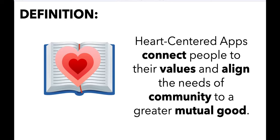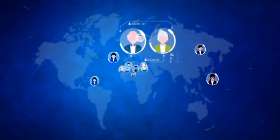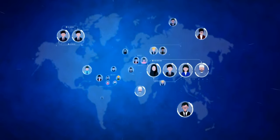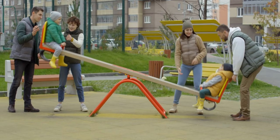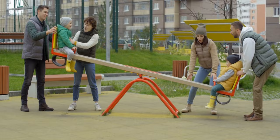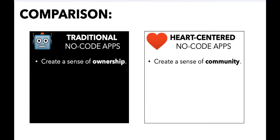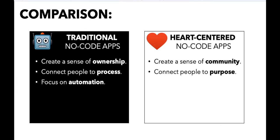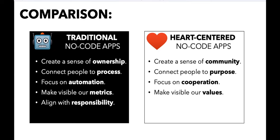I always say technology is good or easy, but it can't be both. Some of the scariest things we see aren't ChatGPT or AI — it's the way people just don't think about how they're using their technology. Heart-centered apps connect people to their values and align to the needs of a community for a greater mutual good. A traditional app creates ownership; a heart-centered app creates community. A traditional app connects people to processes; a heart-centered app connects people to purpose. Traditional focuses on automation; heart-centered focuses on cooperation. Traditional makes metrics visible; heart-centered makes values visible.